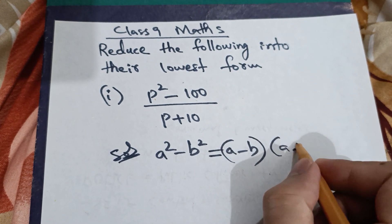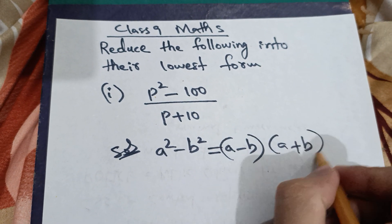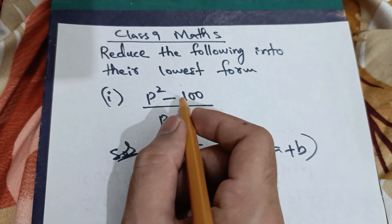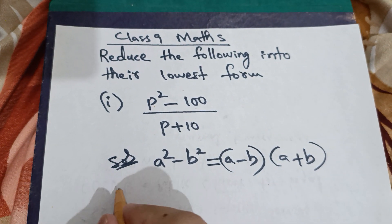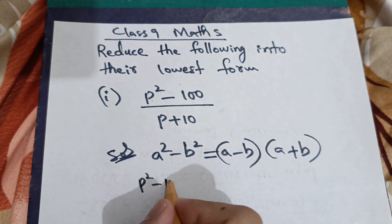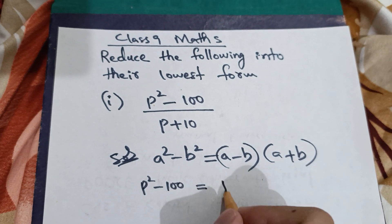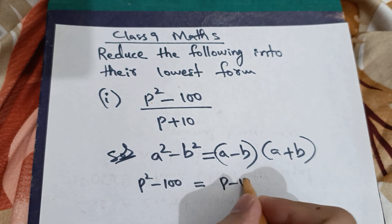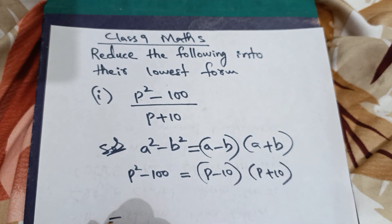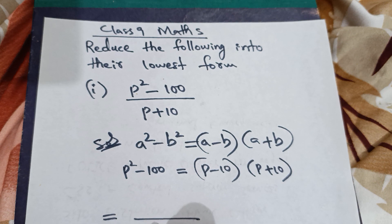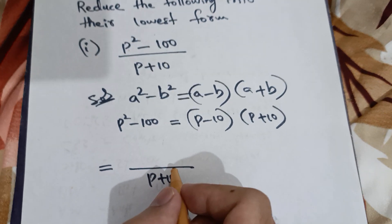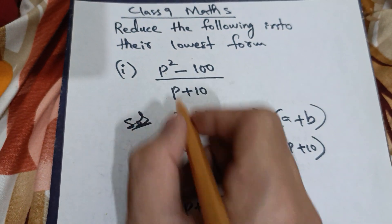Here a is p and b is 10. So we can write p squared minus 100 as p minus 10 into p plus 10. The denominator is p plus 10, and in the numerator we write p minus 10 into p plus 10.